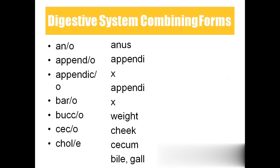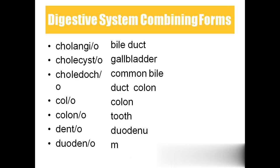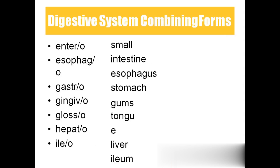Combining forms in the digestive system: ano means anus, appendo/appendico means appendix, baro means weight, bucco means cheeks, ceco means cecum (part of large intestine), chole means bile or gallbladder, colangio means bile duct, cholecysto means gallbladder, choledoco means common bile duct, colo/colono means colon, dento means tooth, duodeno means duodenum, entero means small intestine, esophago means esophagus, gastro means stomach.